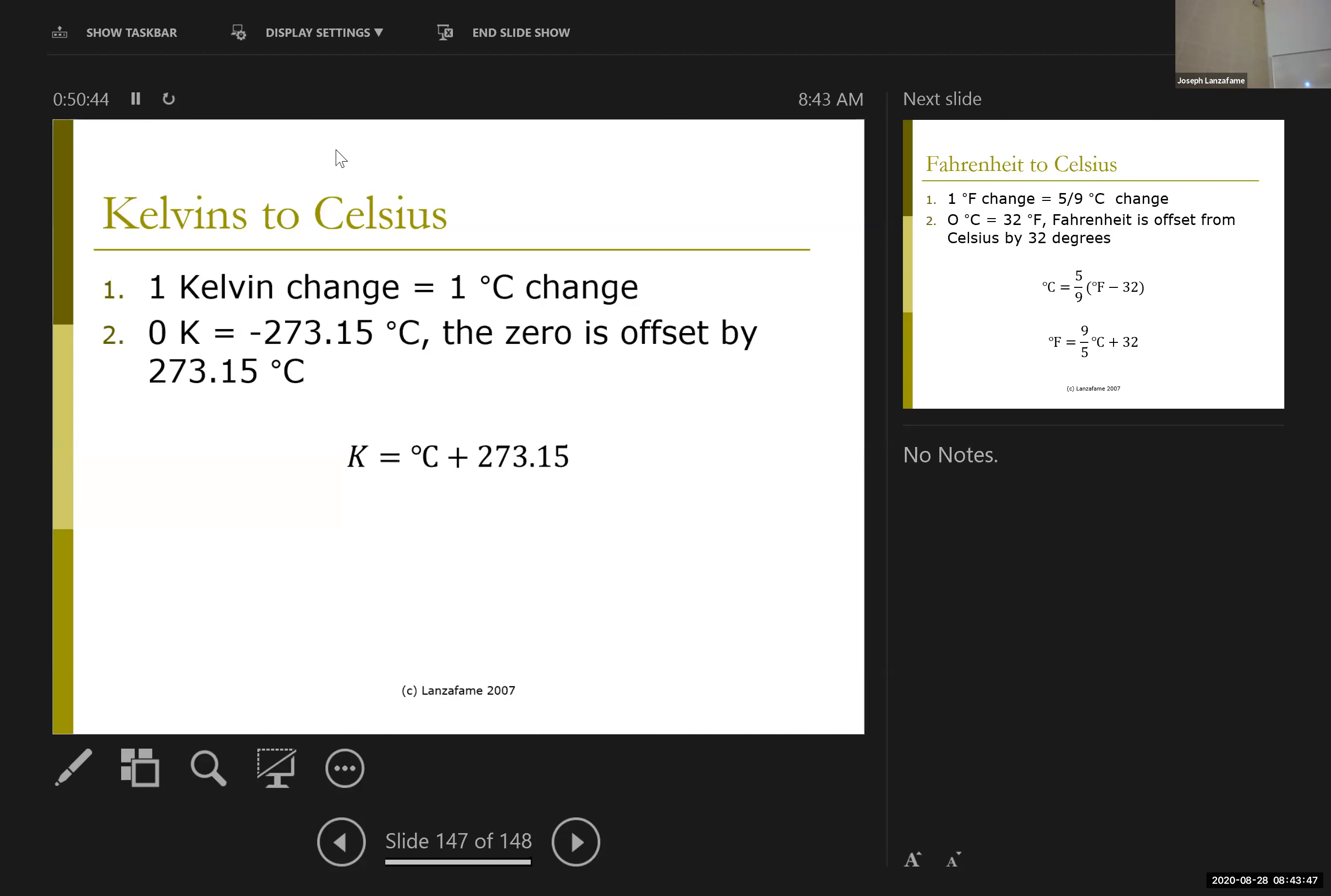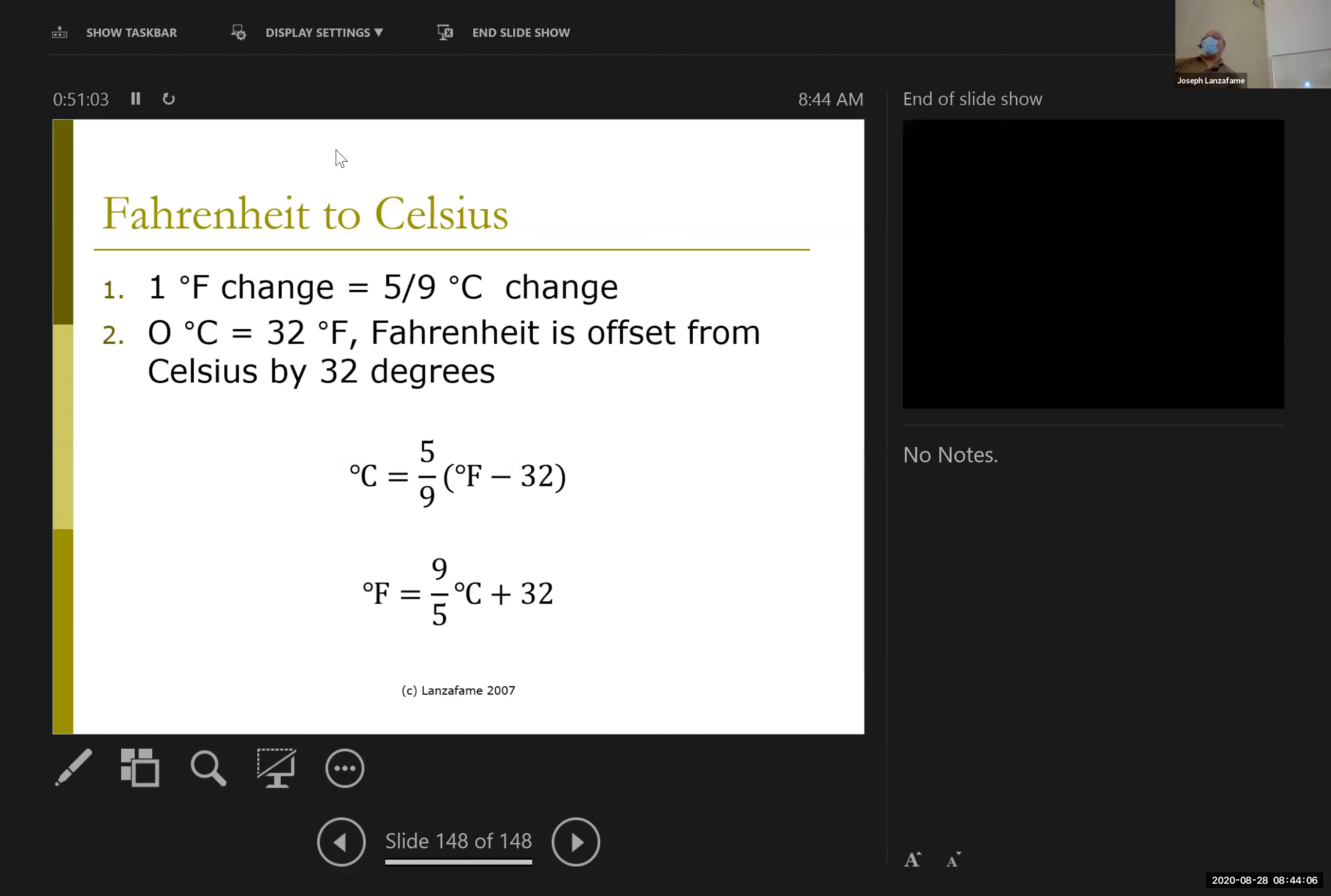Zero Kelvins corresponds to negative 273.15 Celsius. Or if you'd like to say it the other way around, zero Celsius is 273.15 Kelvins. So you may have seen before this little conversion from Kelvins to Celsius. All it's really doing is adjusting the zero. If you take your degree C, and add 273, you're really just moving the zero Celsius down to zero Kelvins.